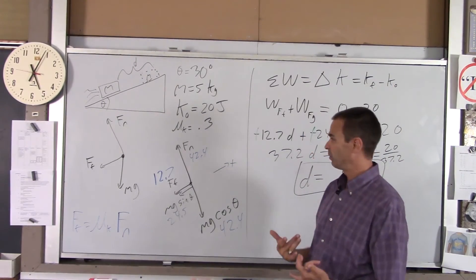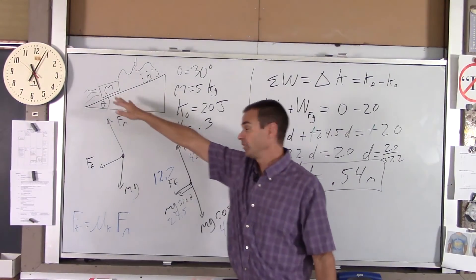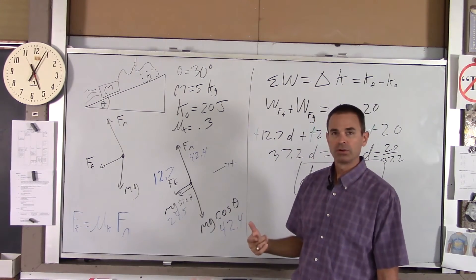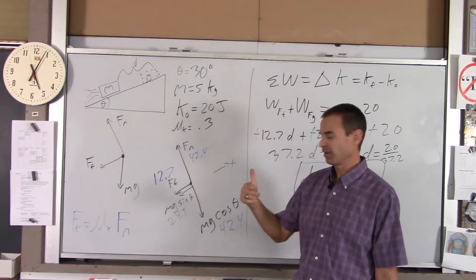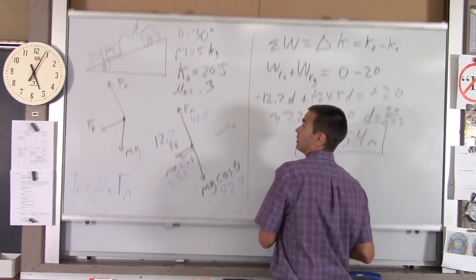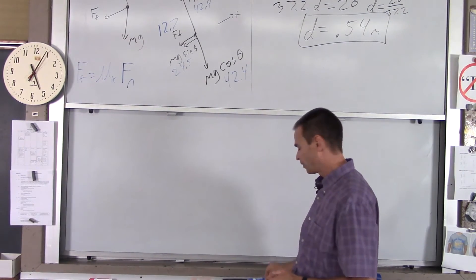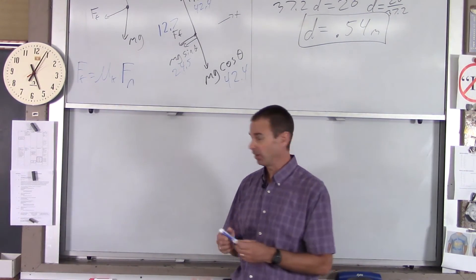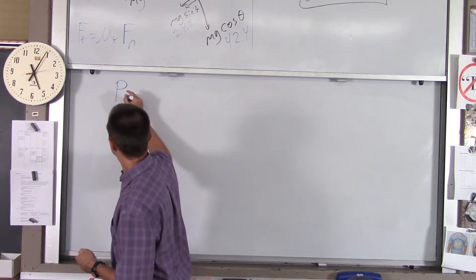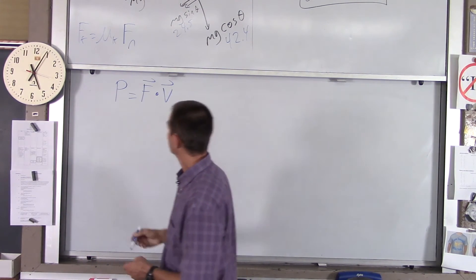Now, the other thing we want to find is, I want to find at this moment here, at the beginning of the problem, when the kinetic energy was 20 joules, what power was being delivered to the block by friction and by gravity. So, if you want the power at that moment, you're looking at instantaneous power. The equation for instantaneous power is force dot velocity.